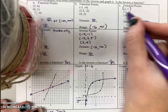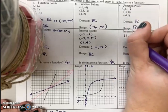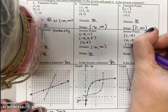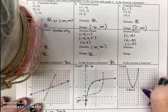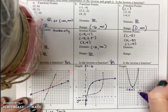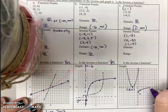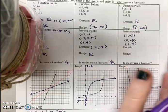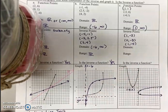Now I'm going to plot the points for my inverse function. First I need to list them — you just switch the x and y's: (1, -2), (0, -3), and (1, -4). Here's (1, -2), (0, -3), and (1, -4). This sort of looks like a slanted parabola — instead of going up and down, it's moving left to right, which does impact our domain and range.